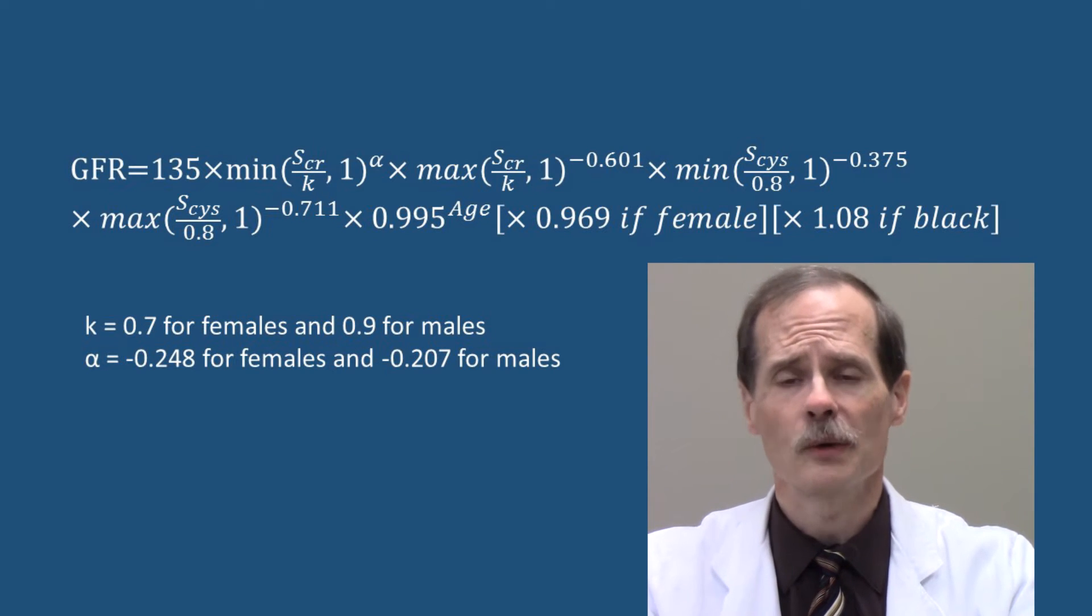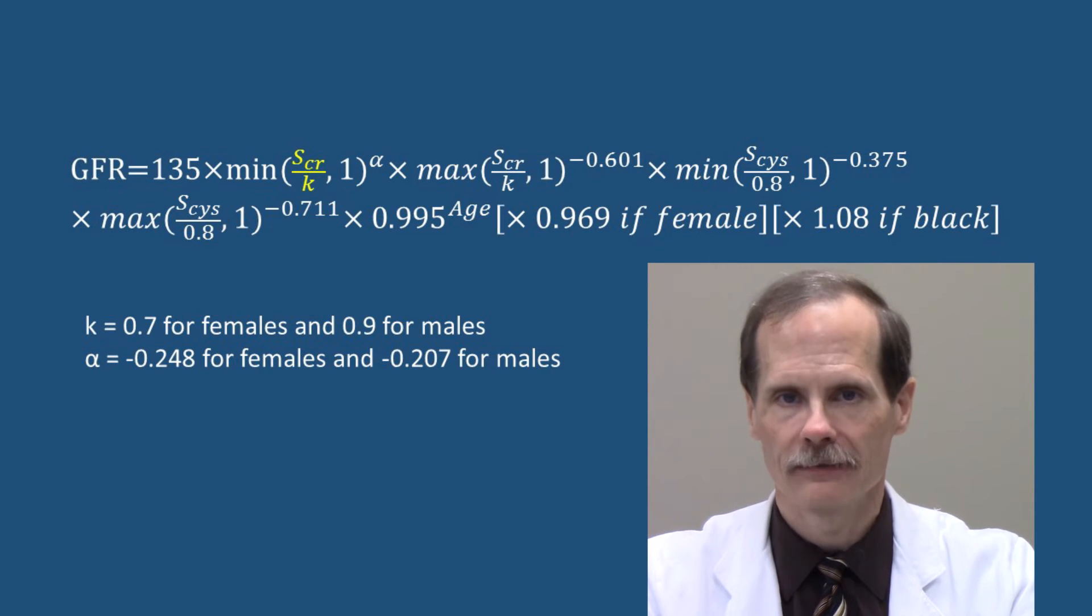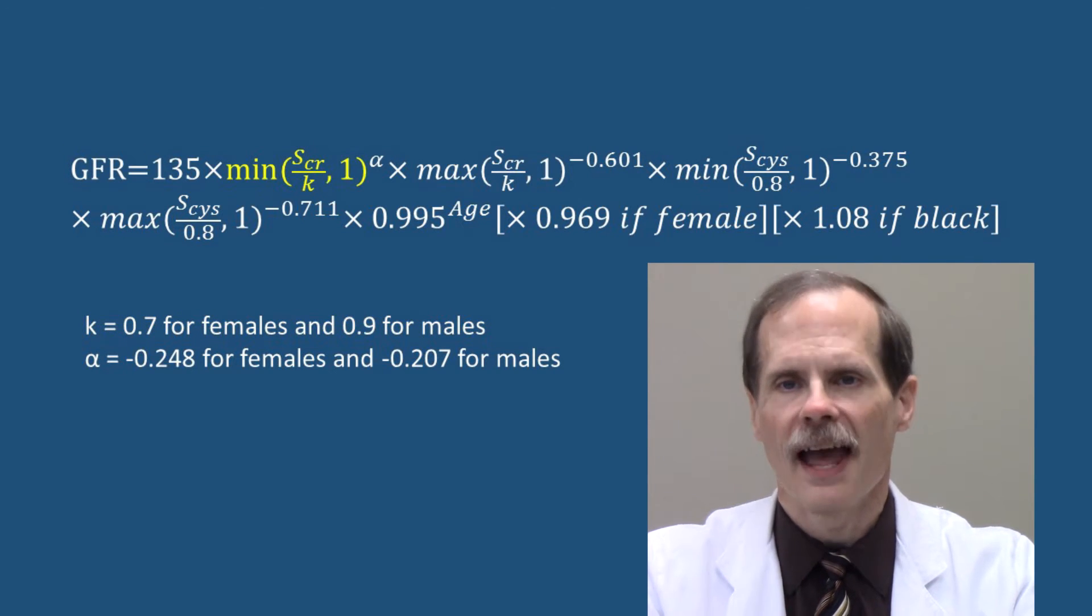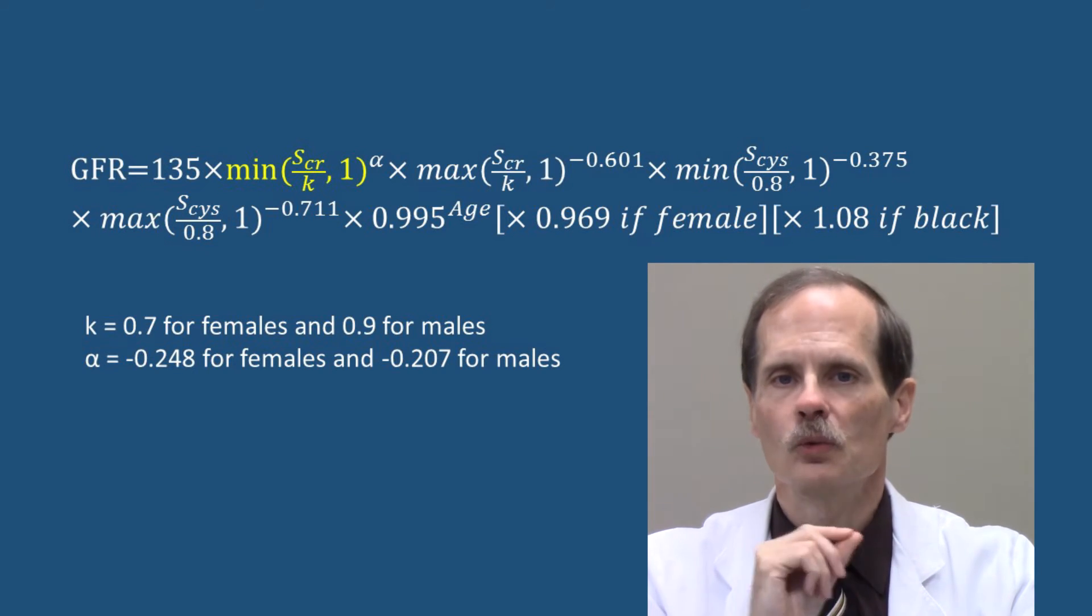The parts of the equation that require the most explanation start with min and max. What one has to do is figure out the value of serum creatinine divided by kappa. Kappa is 0.7 for females and 0.9 for males. Then one has to figure out which is smaller, the ratio of serum creatinine to kappa or one.